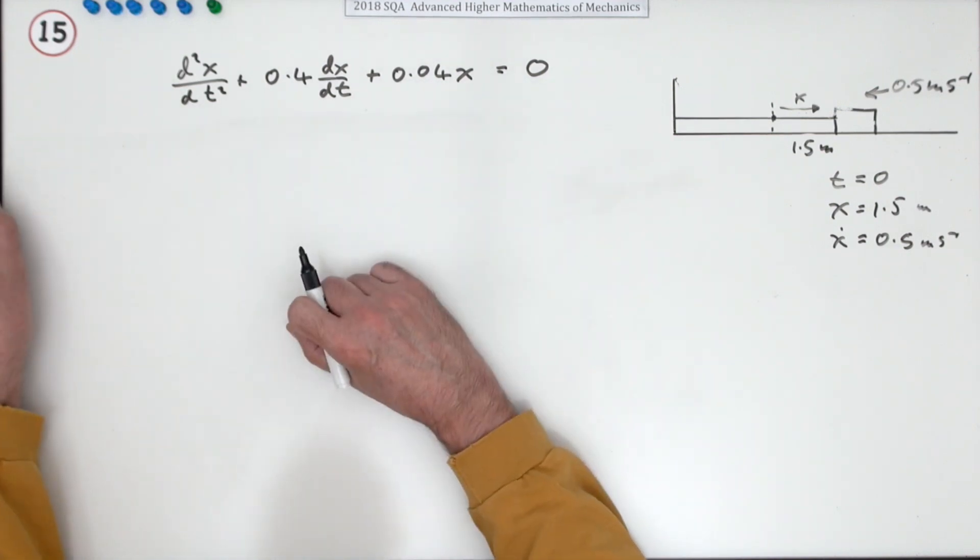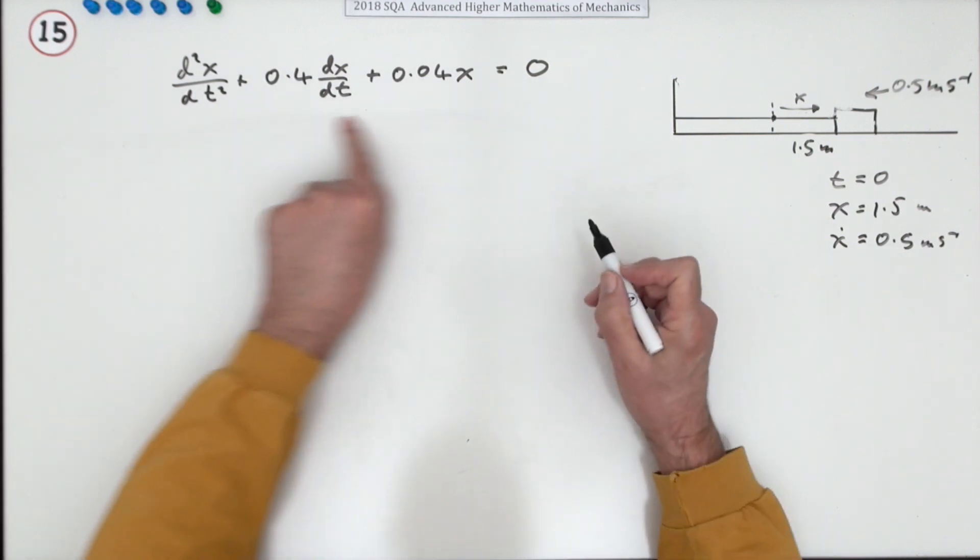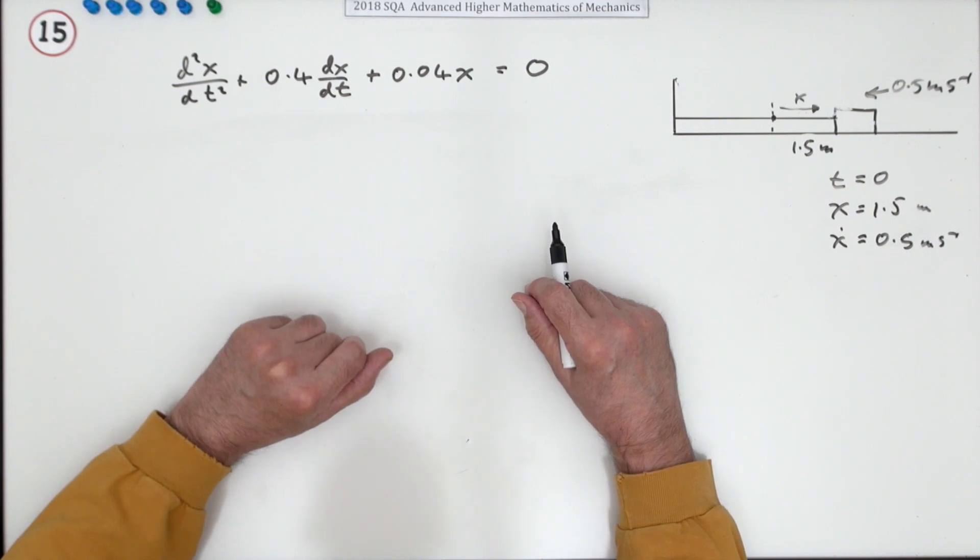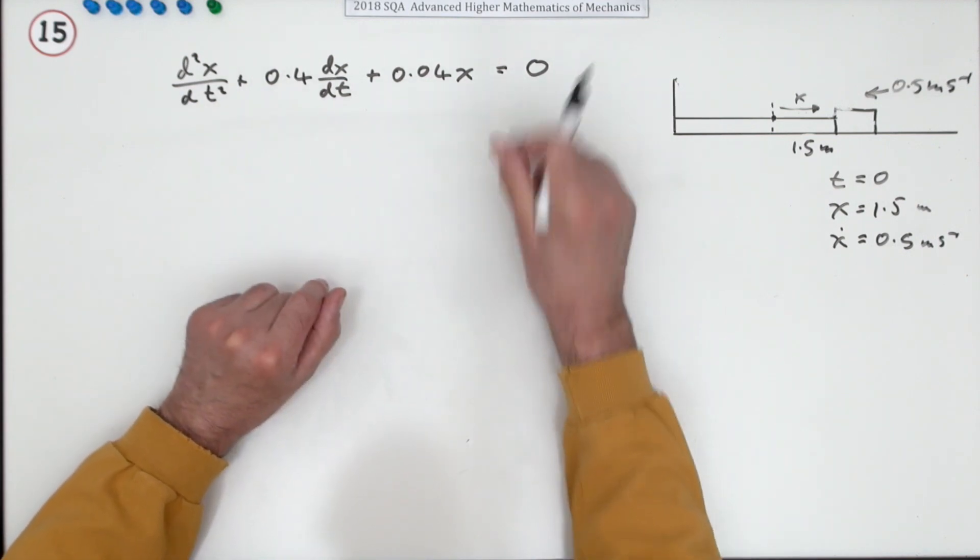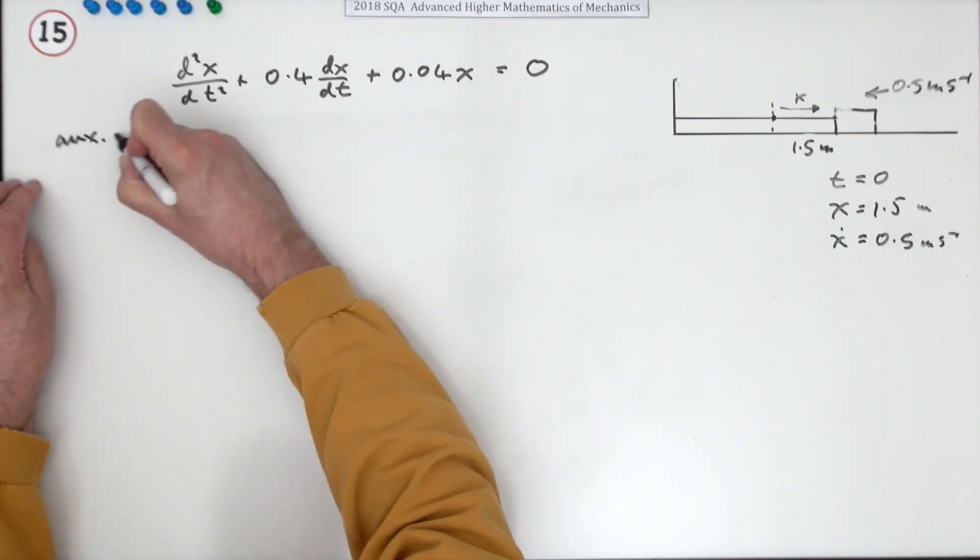Then we'll see what happens. Right, so that means the first stage is you've got a second order differential equation, because you've got the second derivative here. It's equal to zero, so it's just a homogeneous differential equation. So the first step is to set up the auxiliary equation.